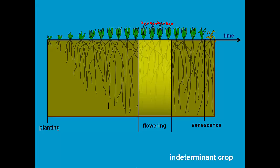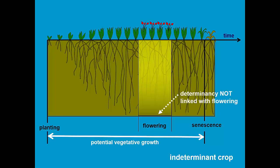In an indeterminate crop, however, the potential vegetative growth extends till senescence. The determinacy is not linked with flowering. This is typically a case for tomatoes, cotton, which still can make leaves while the crop is flowering.